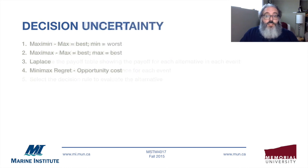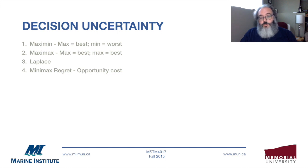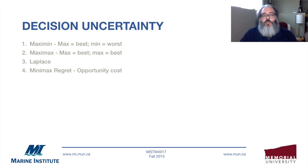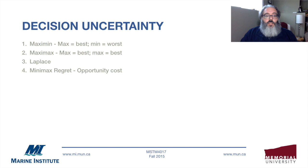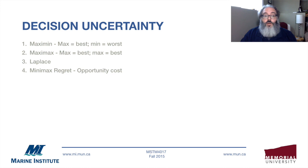One thing I wanted to talk about is decision uncertainty. There are four ways we can calculate an optimal solution under decision uncertainty. First is maxi-min: we figure out what's the best of the worst-case scenario — if the worst were to happen, what's the best option we could pick? Next we have maxi-max, which is the best of the best case. We use some probabilities, calculate our best options, and pick the best-case scenario solution.